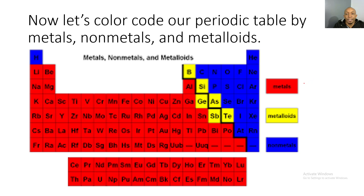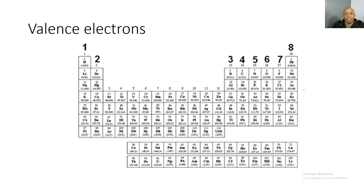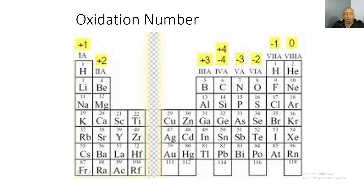Great. At this time, your periodic table should be complete with valence electrons, oxidation number or charge, and color coded by metals, non-metals, and metalloids. Let's go ahead and review a little bit — there are your valence electrons and there is your oxidation number.